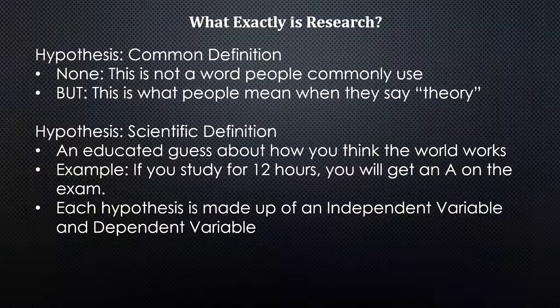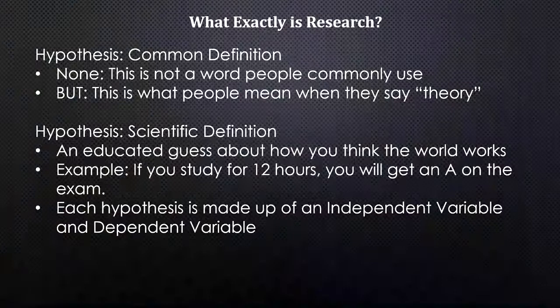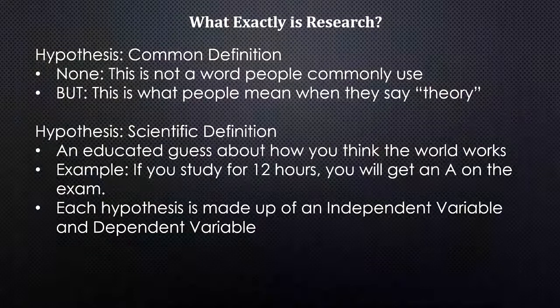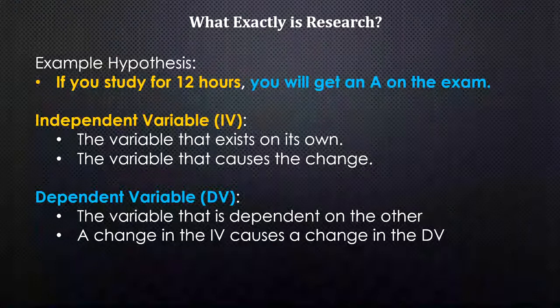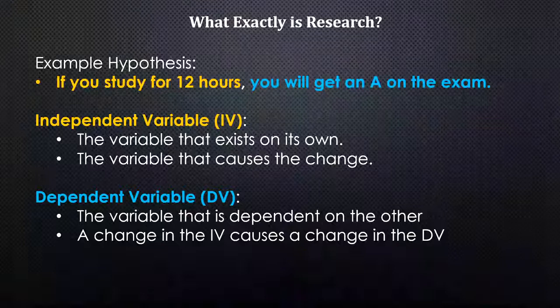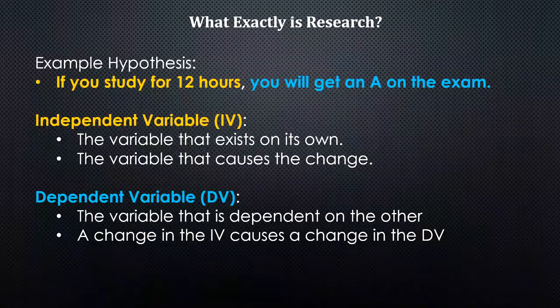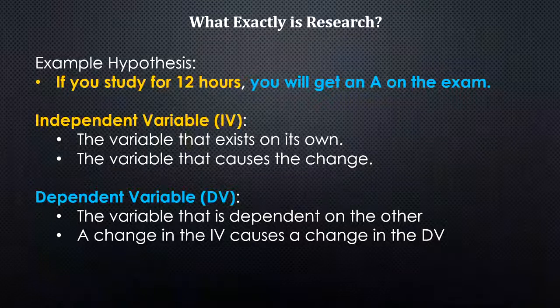A hypothesis by the scientific definition is an educated guess about how you think the world works. For example, here's a hypothesis: if you study for 12 hours, you will get an A on the exam. You have an idea about how studying will impact your grade — that is a hypothesis. Each hypothesis is made up of an independent variable and a dependent variable. Studying for 12 hours is the independent variable — it exists on its own and causes change. Getting an A on the exam is the dependent variable, dependent on the other.